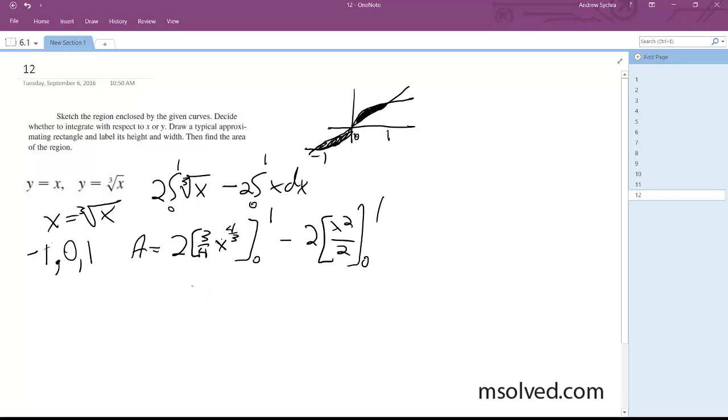So we get 2 times 3 fourths, so we end up with 6 over 4 minus 2 over 2. We get 3 over 2 minus 1, which is equal to 1 half. That's it.